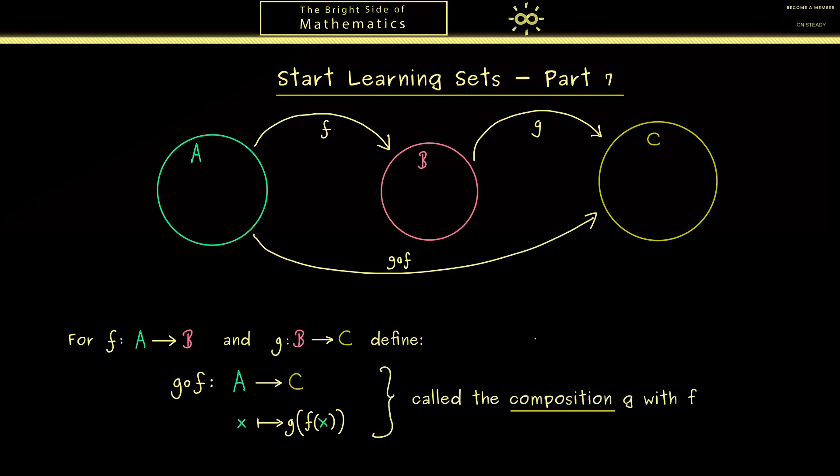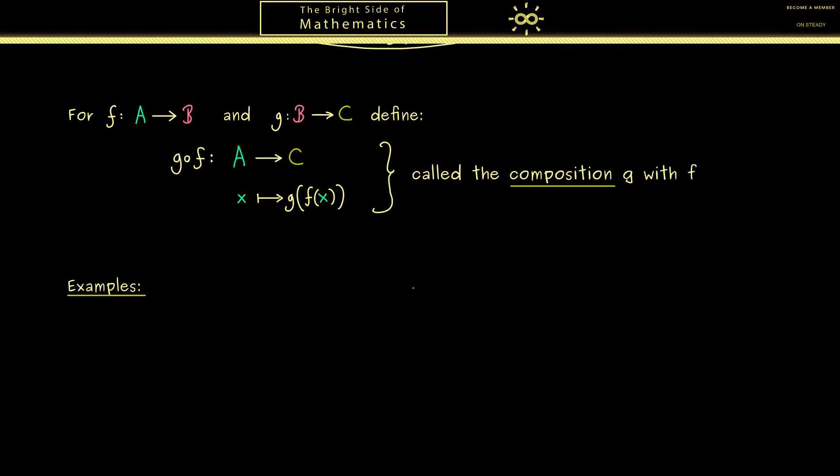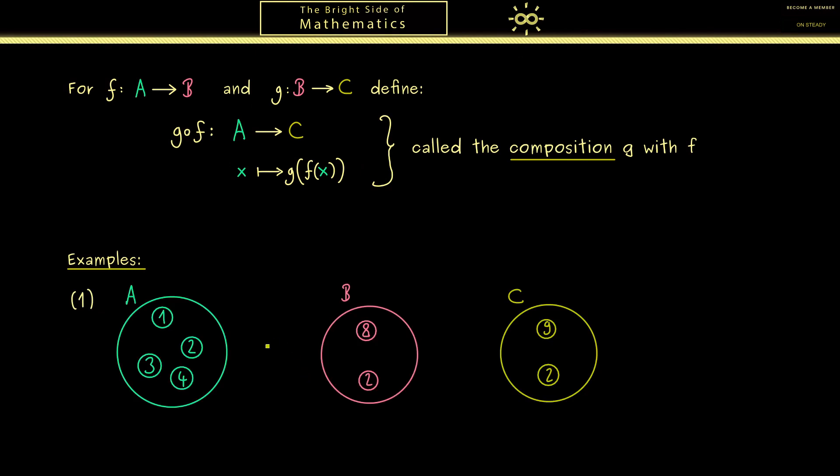Now as always it's good to look at examples first. Let's start with a very simple one. So here you see our three sets. The set A has 4 elements. The set B has 2 elements. And the set C has also 2 elements.